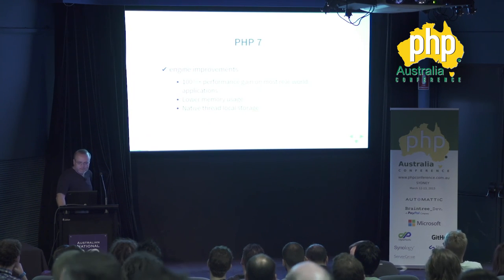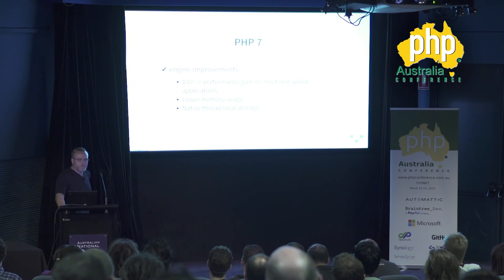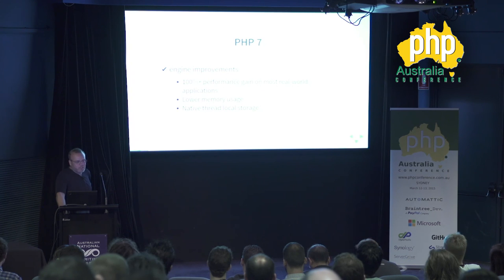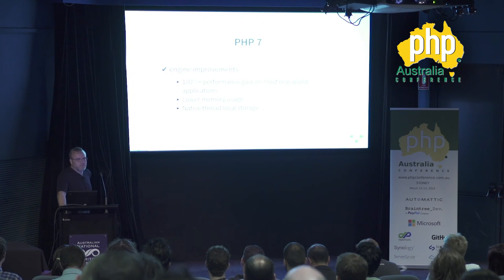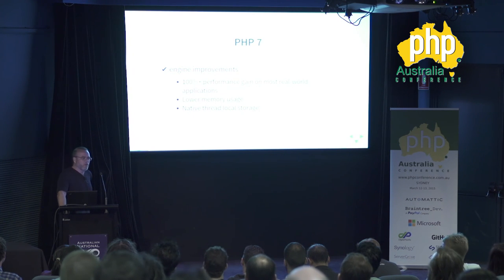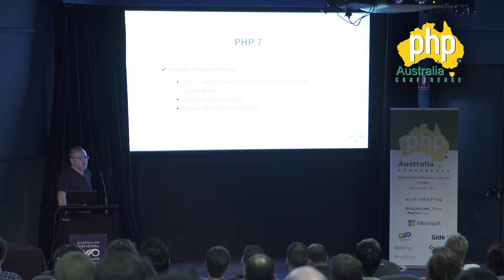So, where are we today? PHP 7 is coming out this year. We have a ton of interesting new things. The biggest thing, at least for me, is the performance — 100% plus performance gain on most real-world applications. You can do micro-benchmarks and get way more than 100% on some things, but on real-world applications — the WordPresses, Laravel apps, bulletin board systems — you're going to see at least double performance simply by upgrading to PHP 7. And hopefully, very few things will break.